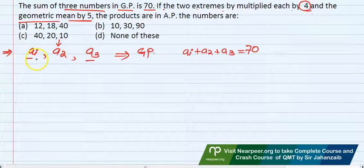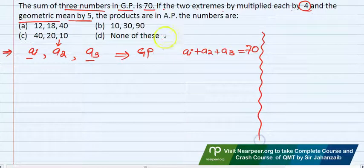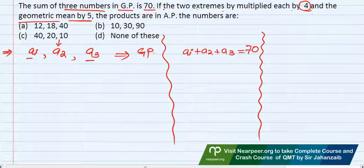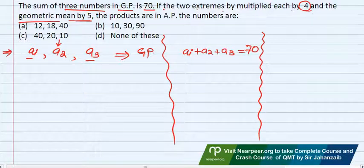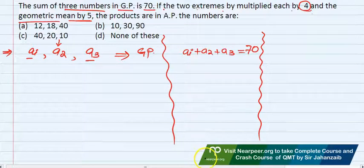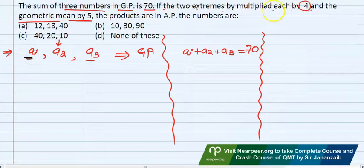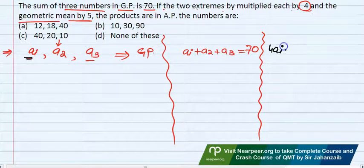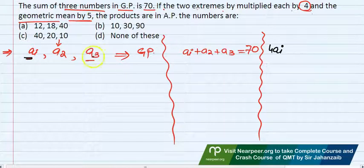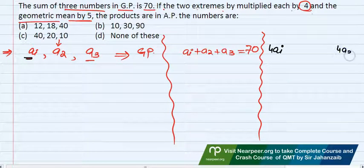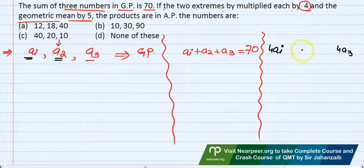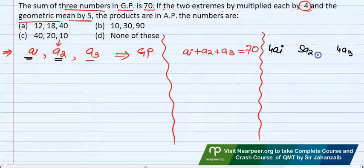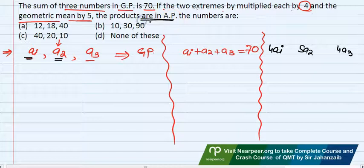The extremes are multiplied by 4. That means a1 multiplied by 4 gives 4a1, and a3 multiplied by 4 gives 4a3. And the center one is multiplied by 5 to get 5a2. These numbers are in AP. These numbers are in arithmetic progression. The numbers you have to tell.